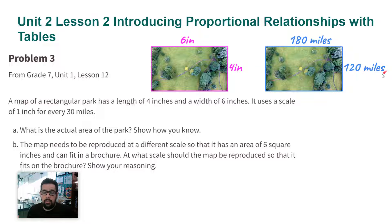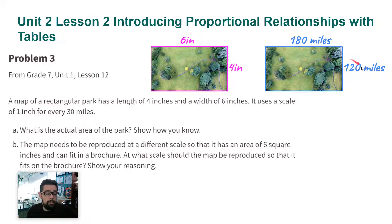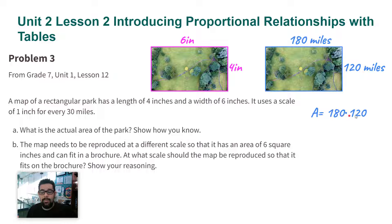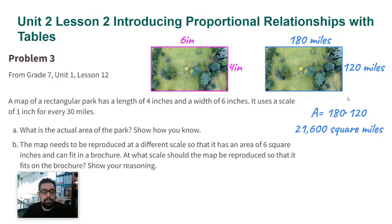Six inches times 30 is 180 miles, and four inches times 30 is 120 miles. Now to answer Part A — what is the actual area? I have the dimensions of the actual park: 180 miles by 120 miles. So I'm going to multiply length times width, and that tells me the area. 180 times 120 gives me 21,600 square miles.